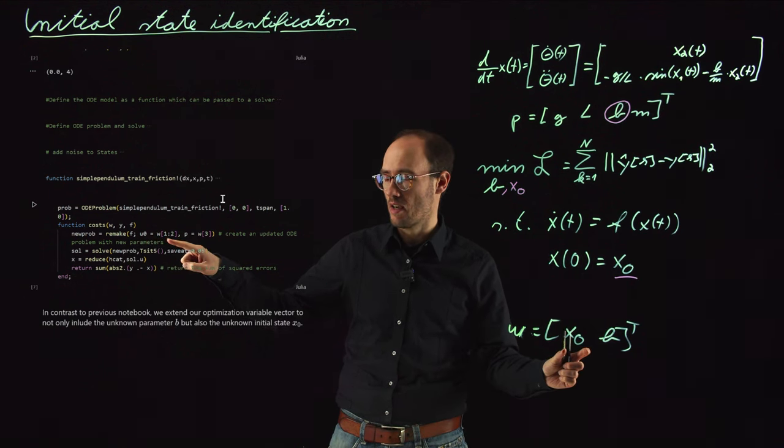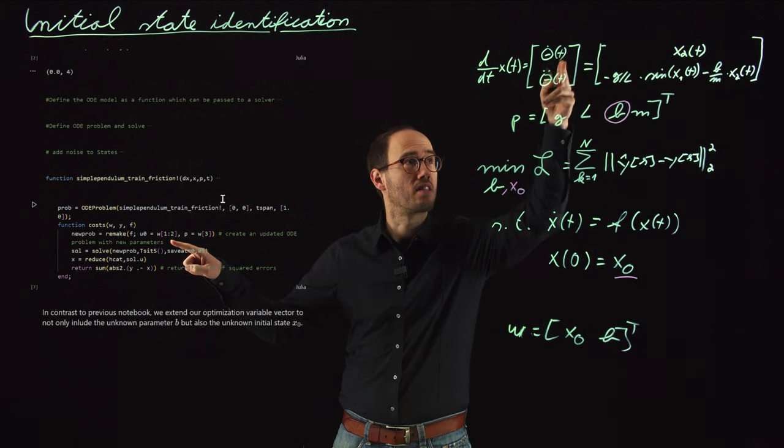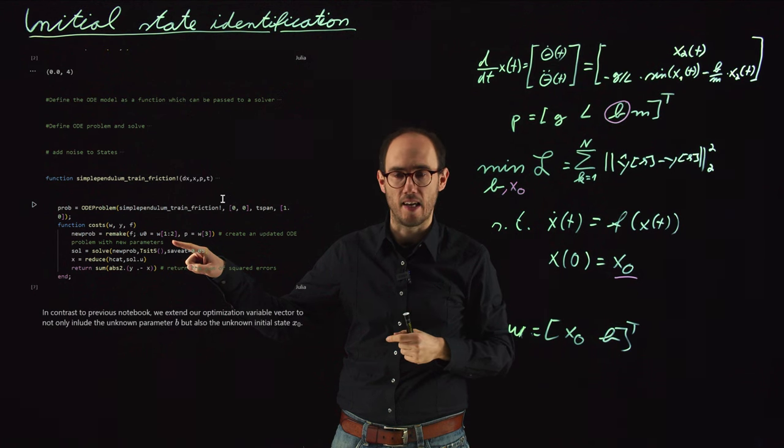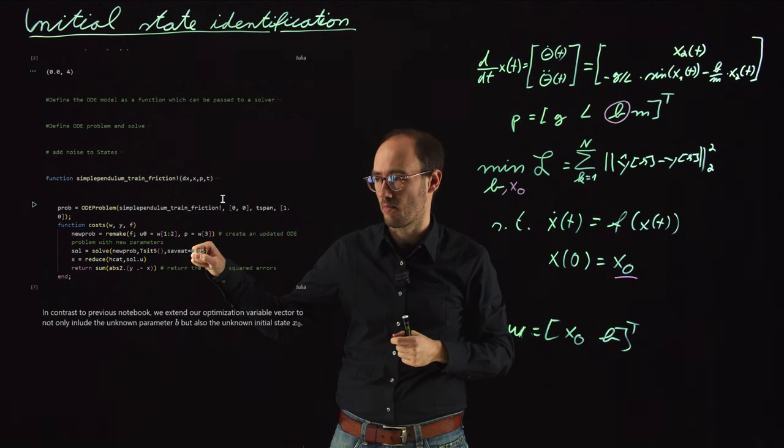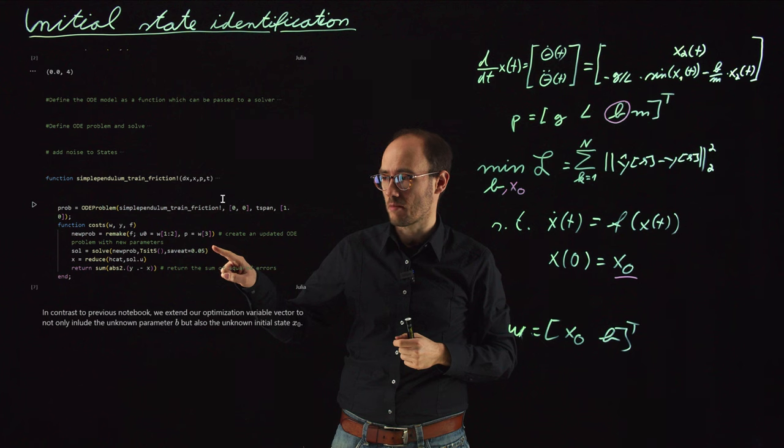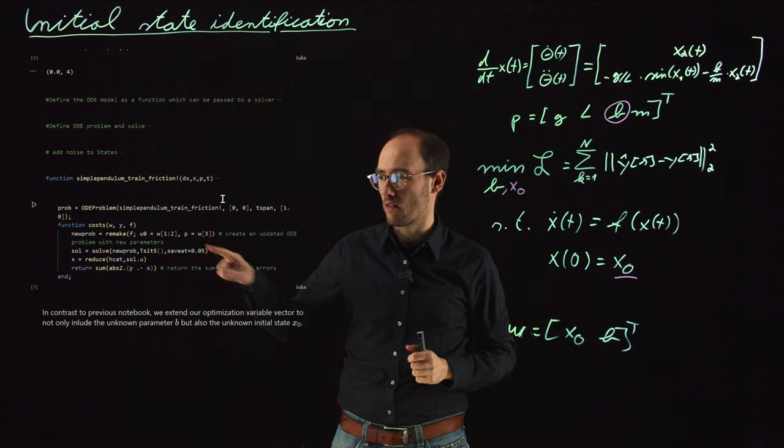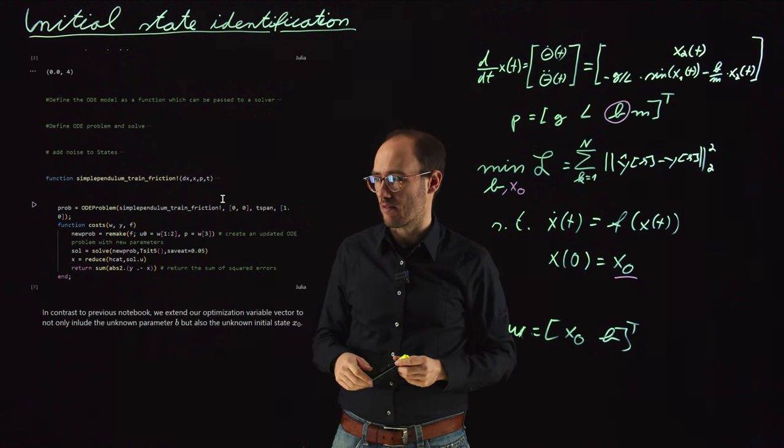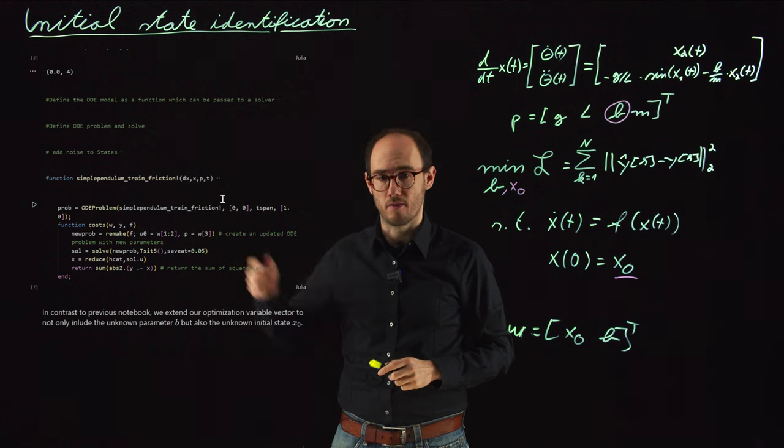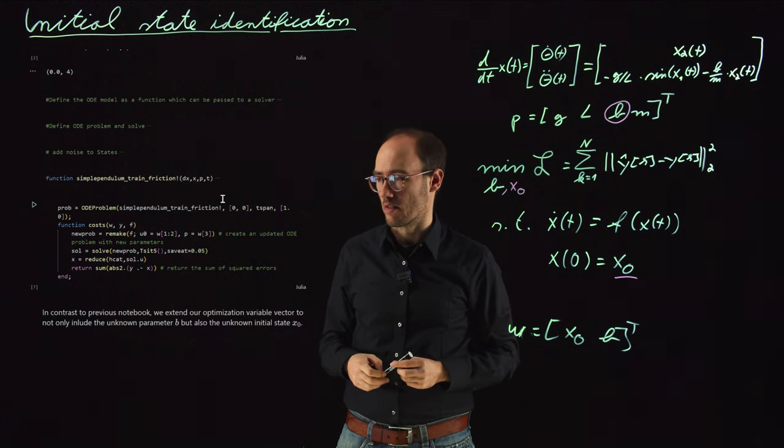And this w[1:2] is basically the initial state. Why do we need two states here? Because we have a state with theta and theta dot so that's why we need basically two scalars in order to describe the initial state. And then the third and last element of the parameter vector, this is describing our unknown b which is here the parameter or the free parameter of our inverted pendulum model as we have also utilized it in the previous video.